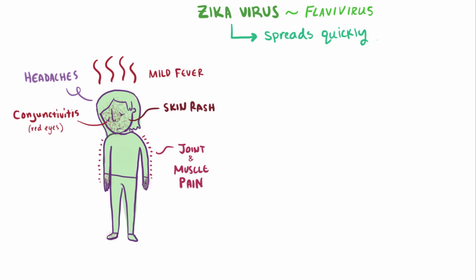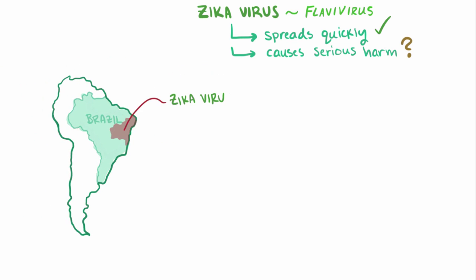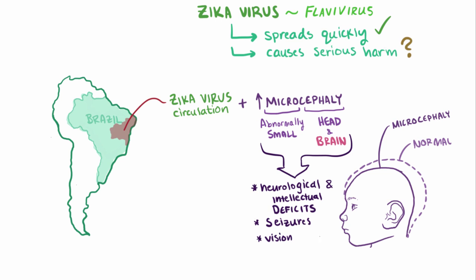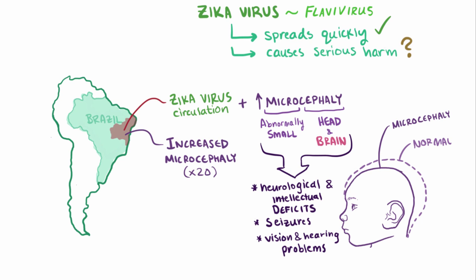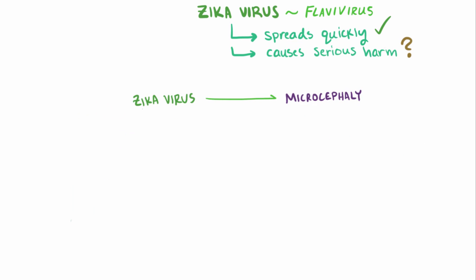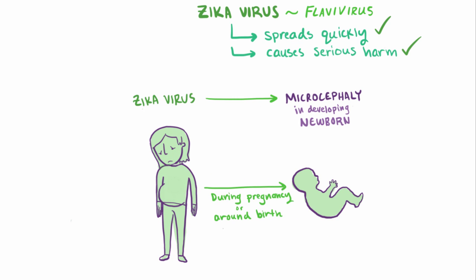So we've hit the spreads quickly part, but what about the causes serious harm part? Although it causes mild symptoms in adults, there's more to the story. In October 2015, in areas of Brazil where Zika virus had been circulating, public health officials noticed a significant increase — up to a 20-fold increase — in babies born with microcephaly, which is when a child is born with an abnormally small head and therefore abnormally small brain size. This has the tendency to cause serious neurological and intellectual deficits, seizures, as well as vision or hearing problems. As of November 2015, the European Center for Disease Control stated it's plausible that Zika virus can cause microcephaly in the developing fetus or newborn, as it can be transmitted from mother to baby during pregnancy or around the time of birth, although it's not fully known how often this happens or exactly how Zika is linked to microcephaly.